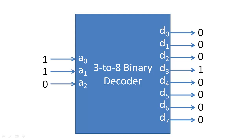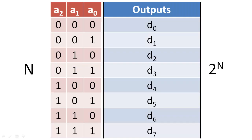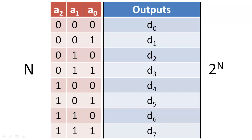So, our binary decoder will have N inputs and 2 to the N outputs. To create each of these outputs, we will need to implement every minterm, so we will need every variable and its complement.